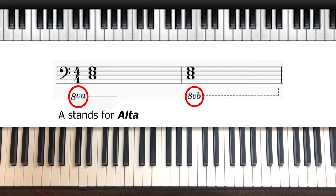8va stands for alta, which in Italian means high, so it means you play an octave higher. So to go down, they put a B instead of an A, which stands for bassa, or below, so you go an octave lower.